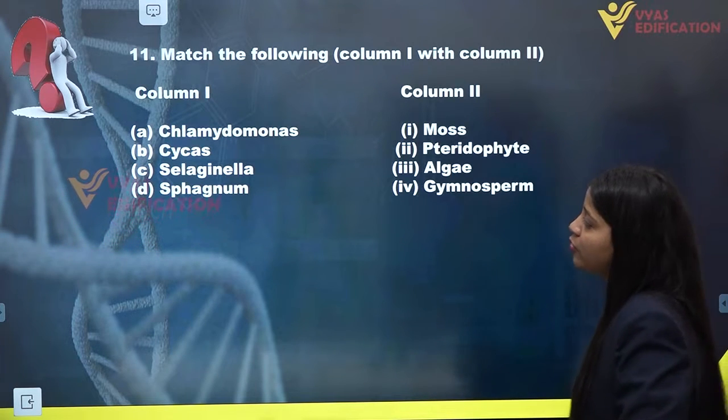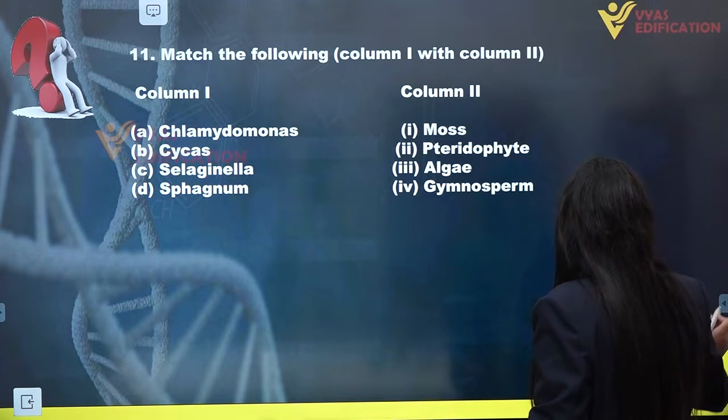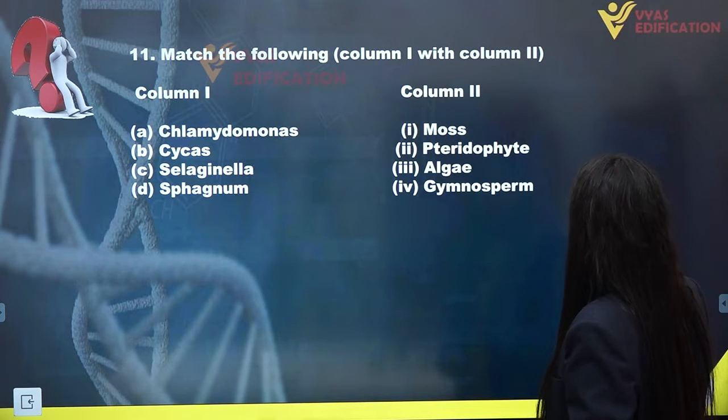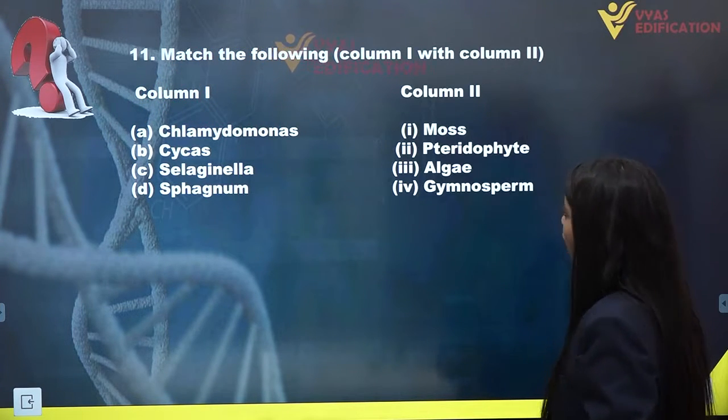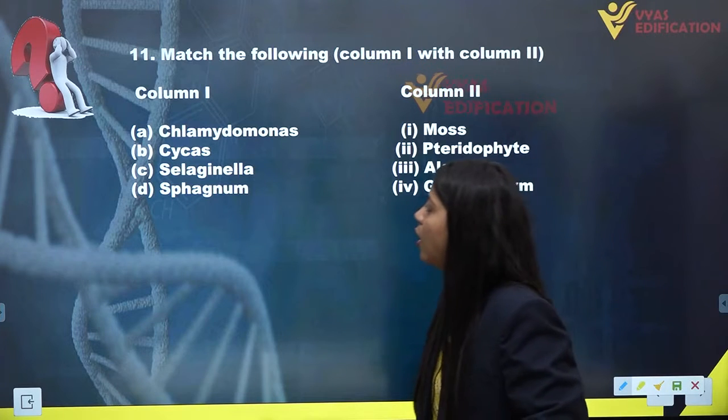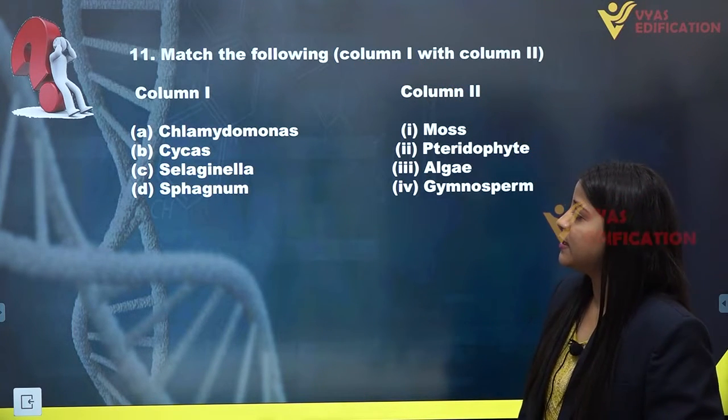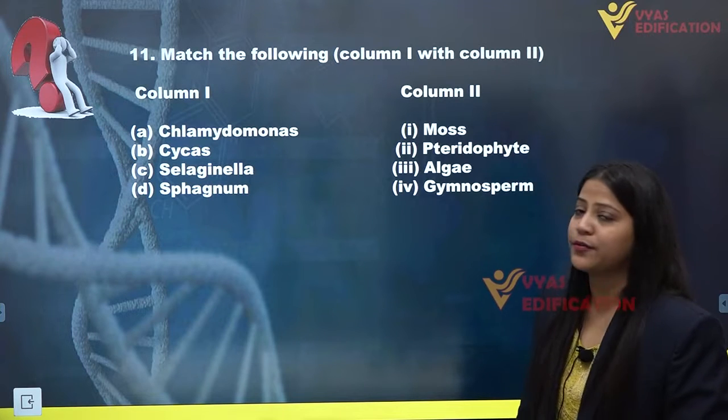Now let's talk about the second last question of this chapter, question number 11. We have to match column 1 options with column 2. Column 1 has A: Chlamydomonas, B: Cycas, C: Selaginella, and D: Sphagnum.